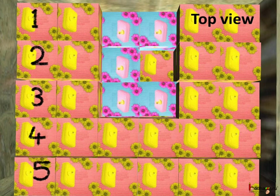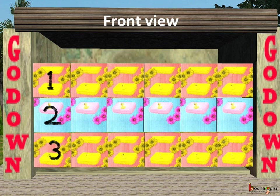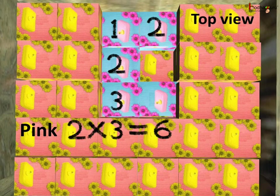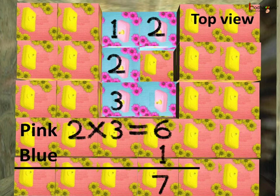So how many boxes are missing from the godown? As we saw from the front view, there were 3 layers of boxes one above the other. The topmost and bottommost layers have pink boxes and the middle one had blue boxes only. From the top view, we can say 2 multiplied by 3, that is 6 pink boxes are missing from the top layer. We can also say 1 blue box is missing. So a total of 7 boxes were missing.